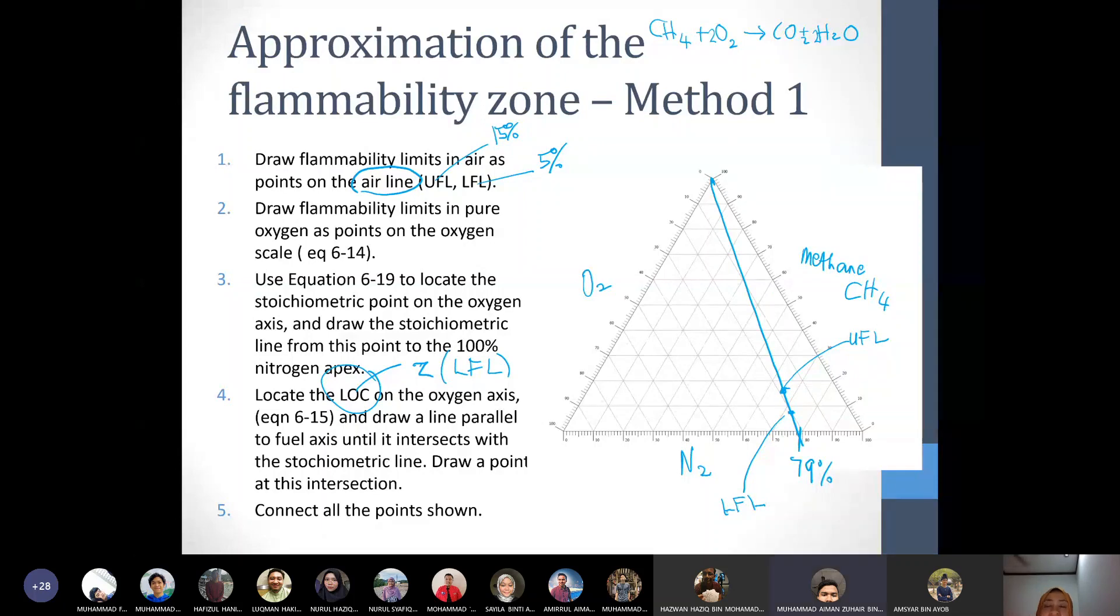So that means Z is 2. So LOC is 2 times 5 equals 10. 10 percent. Okay, so here. So this is LOC. We draw a line parallel to the fuel line down there.